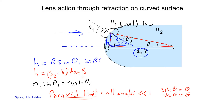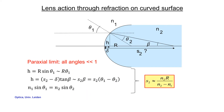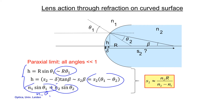In the paraxial limit, sine theta ≈ theta and tangent theta ≈ theta. Applying that to our expressions, we find h = r times theta_1, and S2 times beta ≈ S2 times (theta_1 minus theta_2), where we used delta much smaller than S2. For the Snell's law expression, we use n2 sine theta ≈ n2 theta_2. Combining these and doing a bit of math, you find the final result.